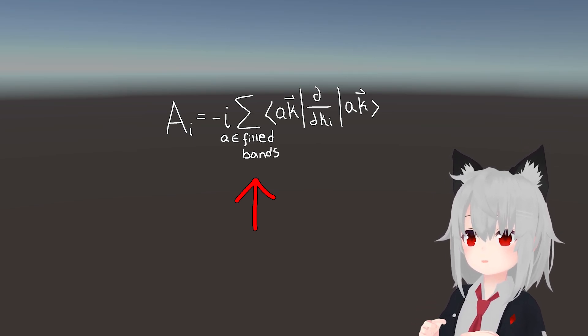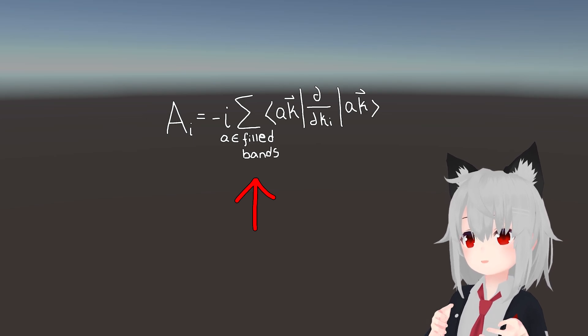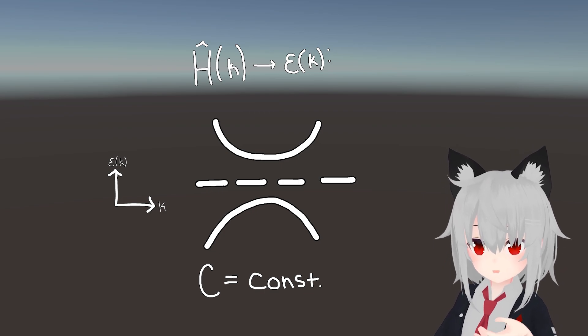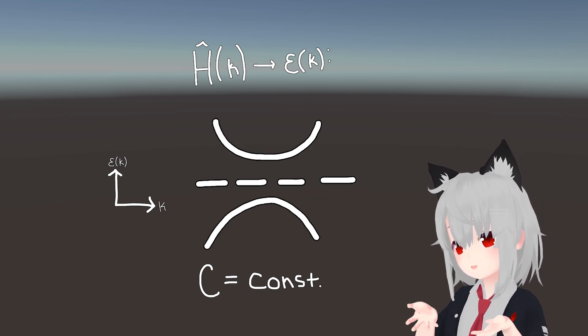What this means is that if we want to maintain our topological character, embodied by the topological invariant, then we're free to deform our Hamiltonian and its underlying band structure in any way that we want, so long as we don't cross the Fermi level, or equivalently close the gap.